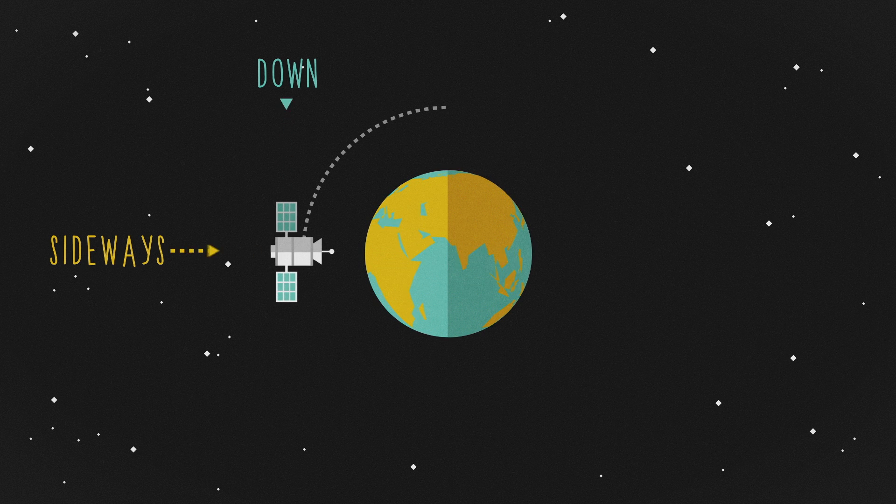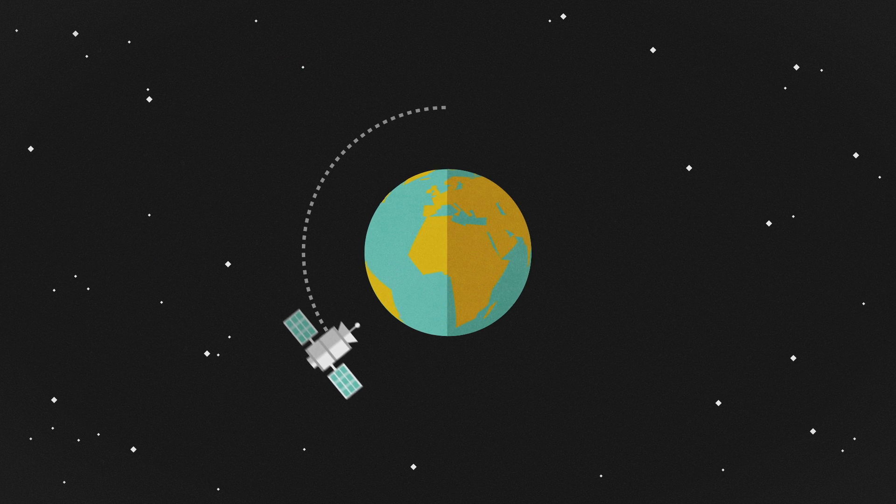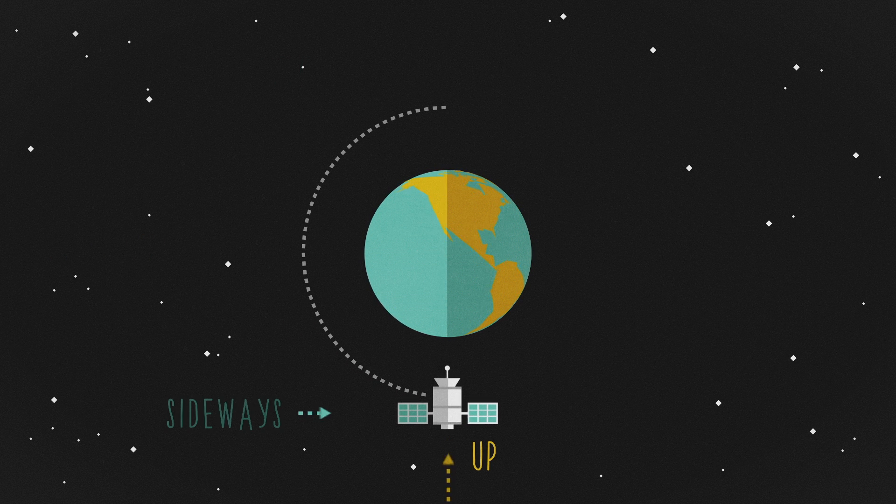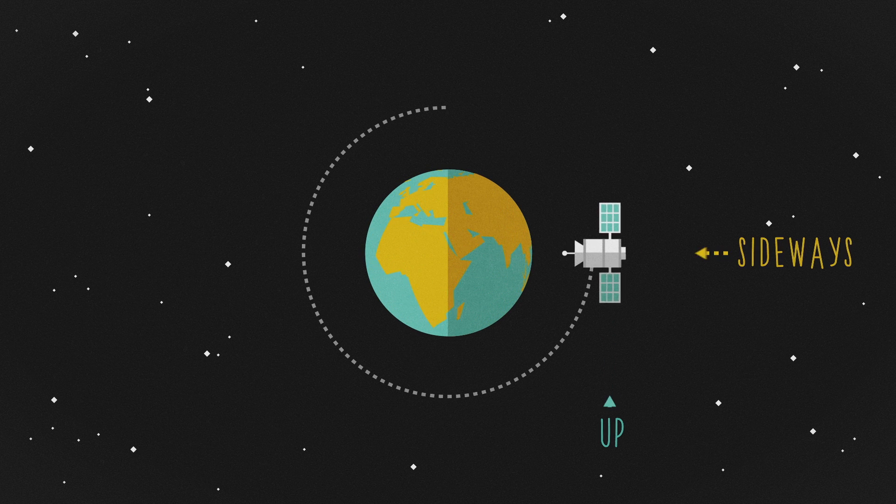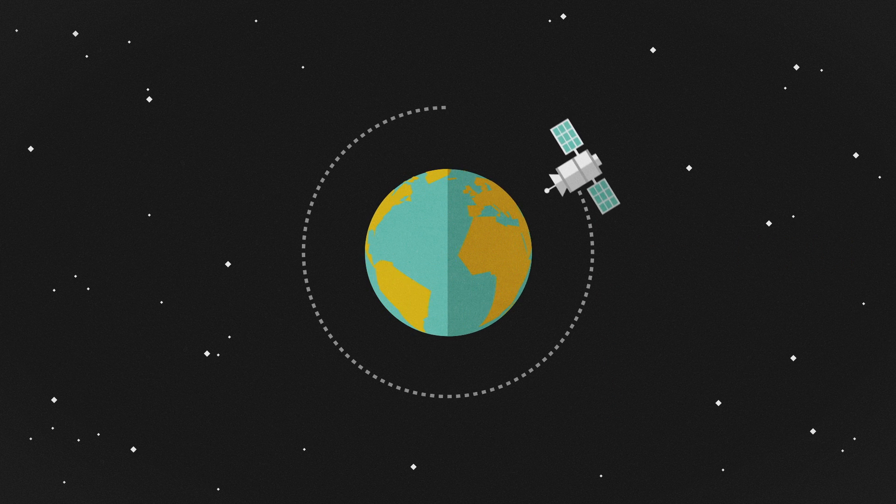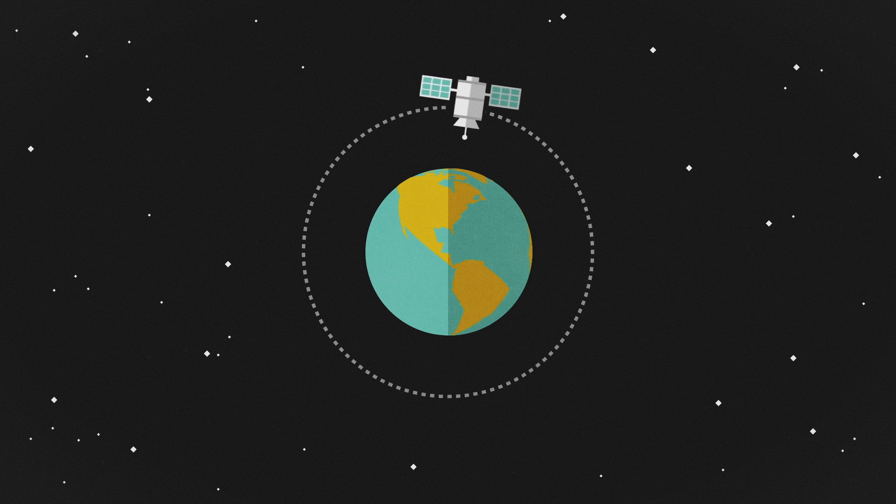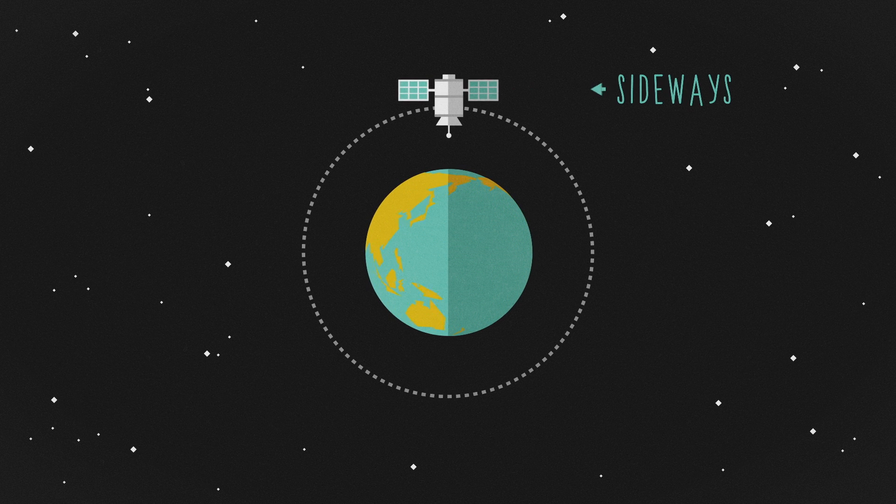And so it's pulling you back in, and you fall down, and so you miss the Earth again. And now you're under the Earth, and the Earth is going to pull you up, but you're moving sideways still, so you're going to miss the Earth again. And now you're on the other side of the Earth, moving upward, and the Earth's pulling you sideways. So you are going to fall sideways, but you're going to be moving up until you miss. And now you're back on top of the Earth again, over the North Pole, going sideways and falling down.